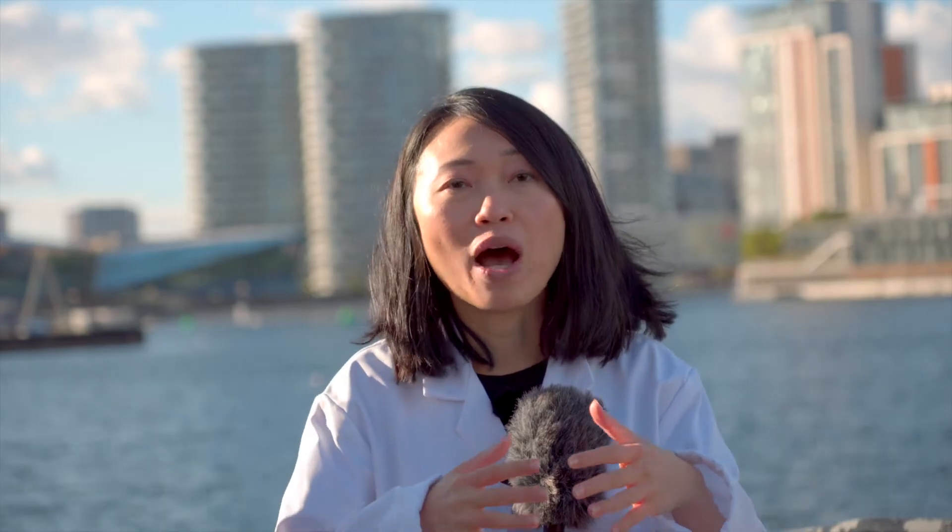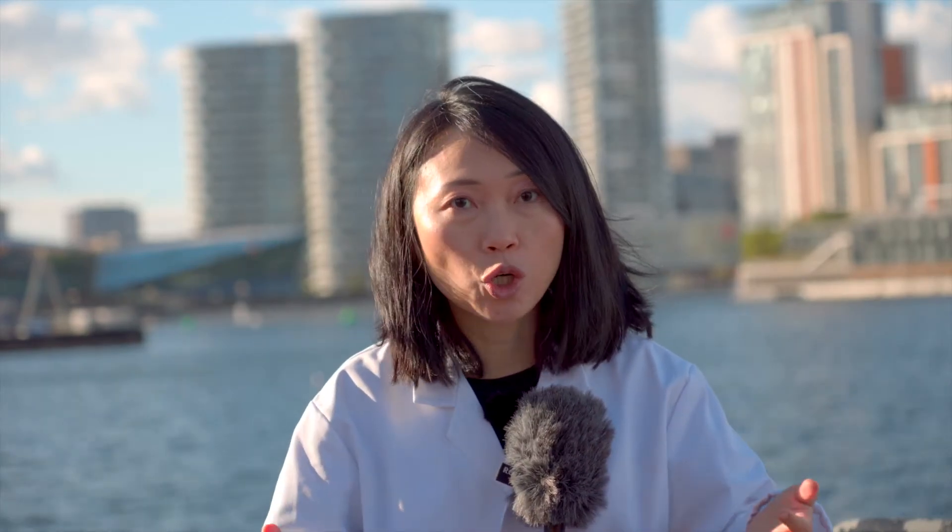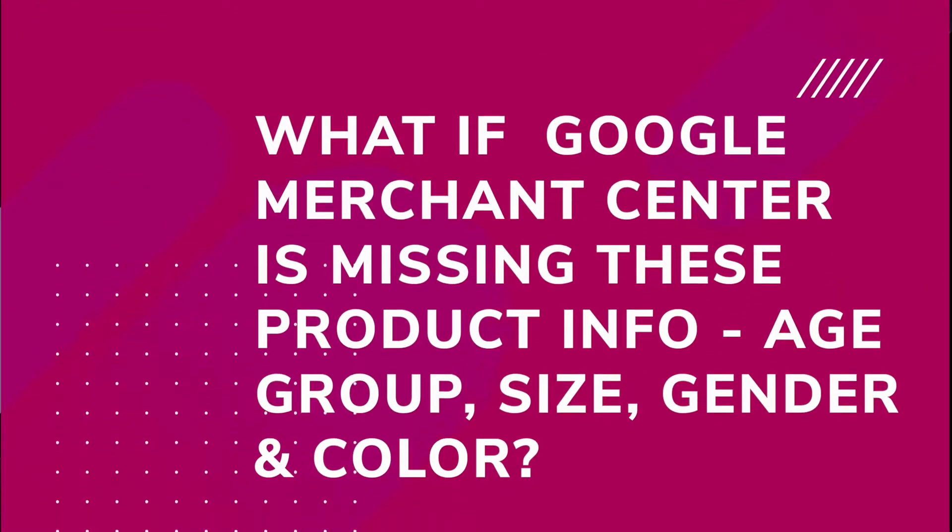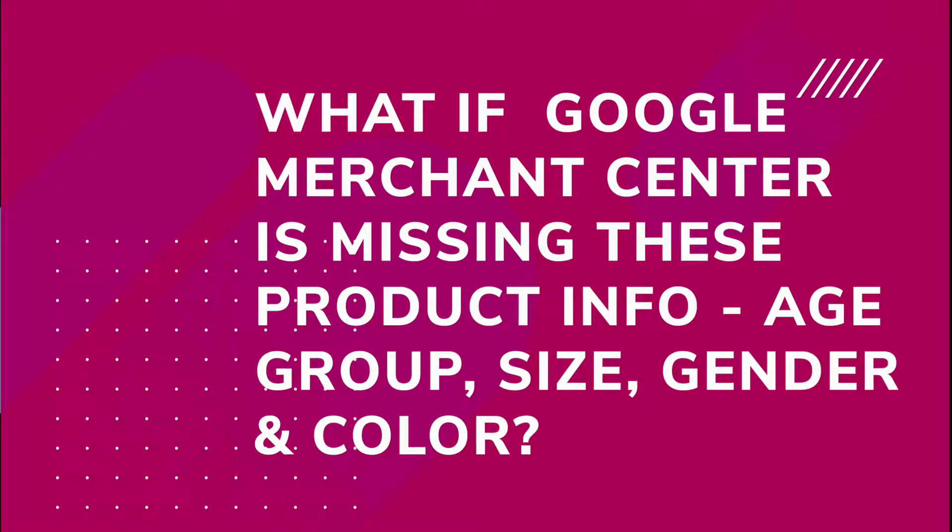This is mainly meant for apparel and accessories — that's the term determined by Google. It basically means that if you are selling an item on your Shopify store that's supposed to be put on a human being — cap, clothes, dress, whatever — you will need these four attributes. If you're not sending all this information to Google Merchant Center, your product is going to be disapproved and not shown on the Google Shopping tab.